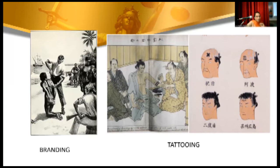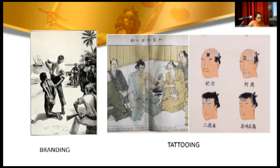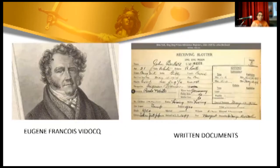Branding involved marking the skin of a criminal with a hot iron so that next time they were seen, it was known this person had been convicted of a previous crime. A similar method was tattooing, which was commonly used in Japan around 10,000 BC, done on the arm or even the forehead. Such branding and tattooing became a social taboo, and these people were unable to get employment or were ostracized as a separate class.